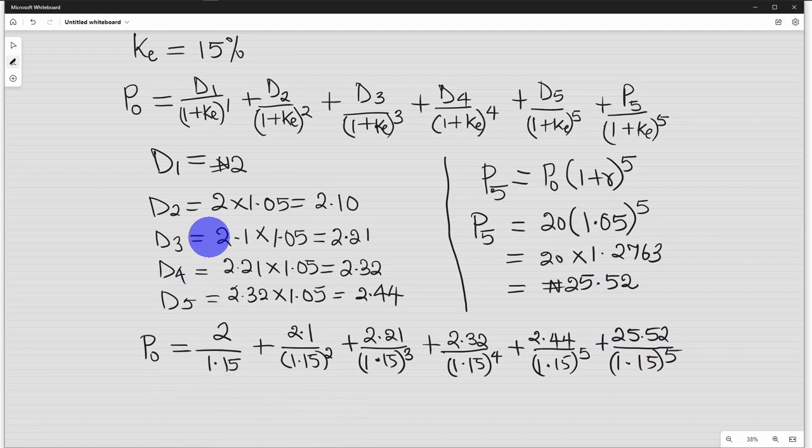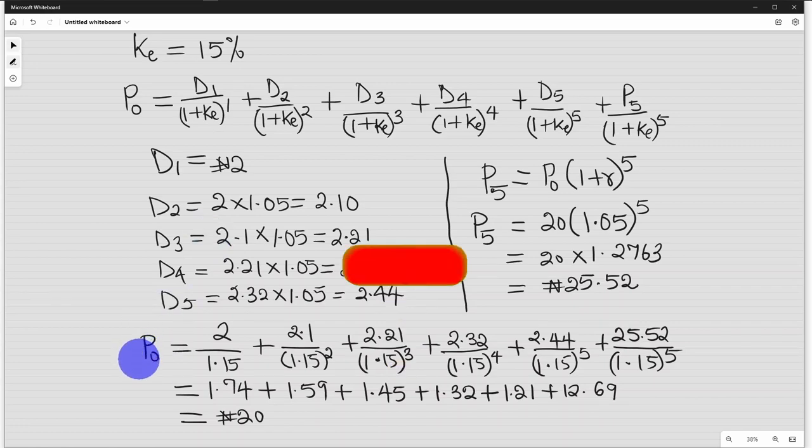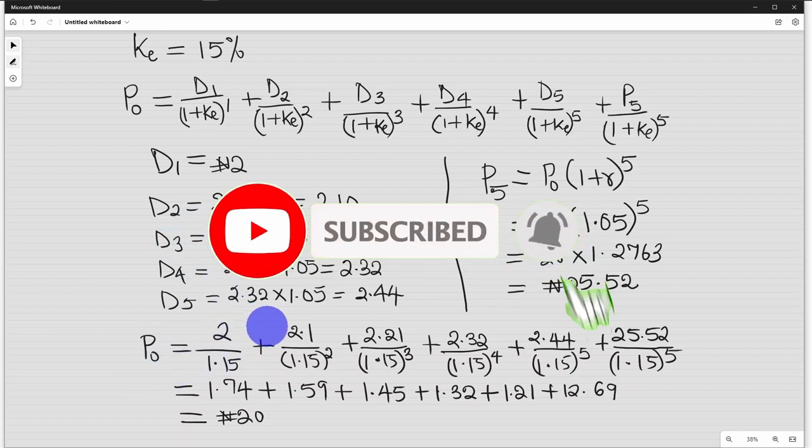This value will be equals to the first one, when we divide it by this, we have 1.74, second one, 1.59, 1.45, and 12.69. So, when we add them together, we'll have 20 Naira, which is the intrinsic value of the stock, given this information.